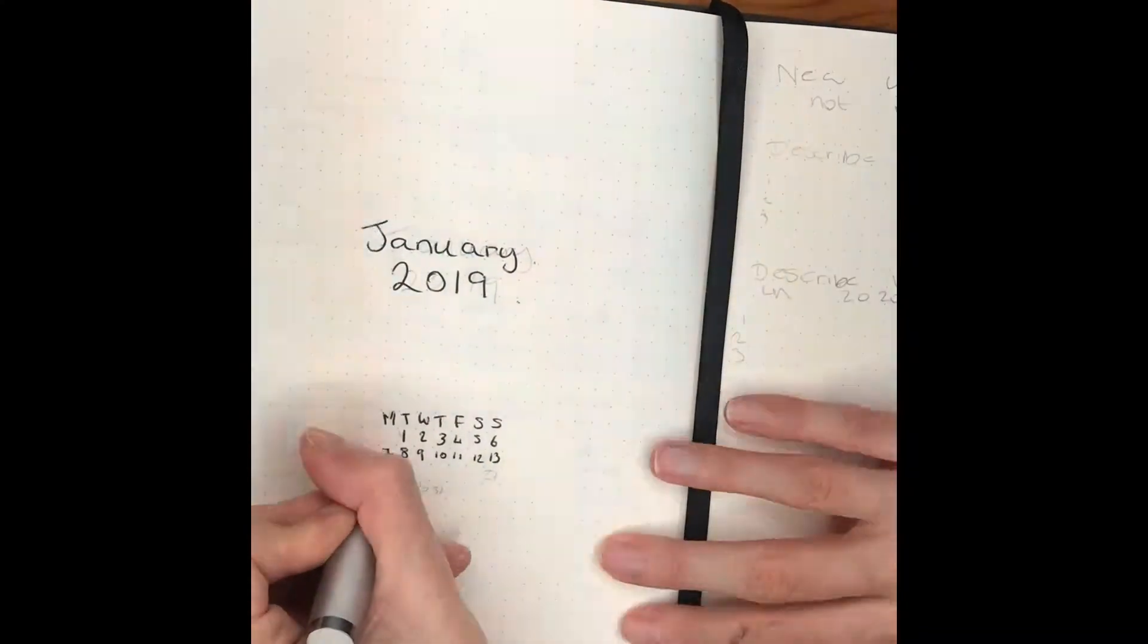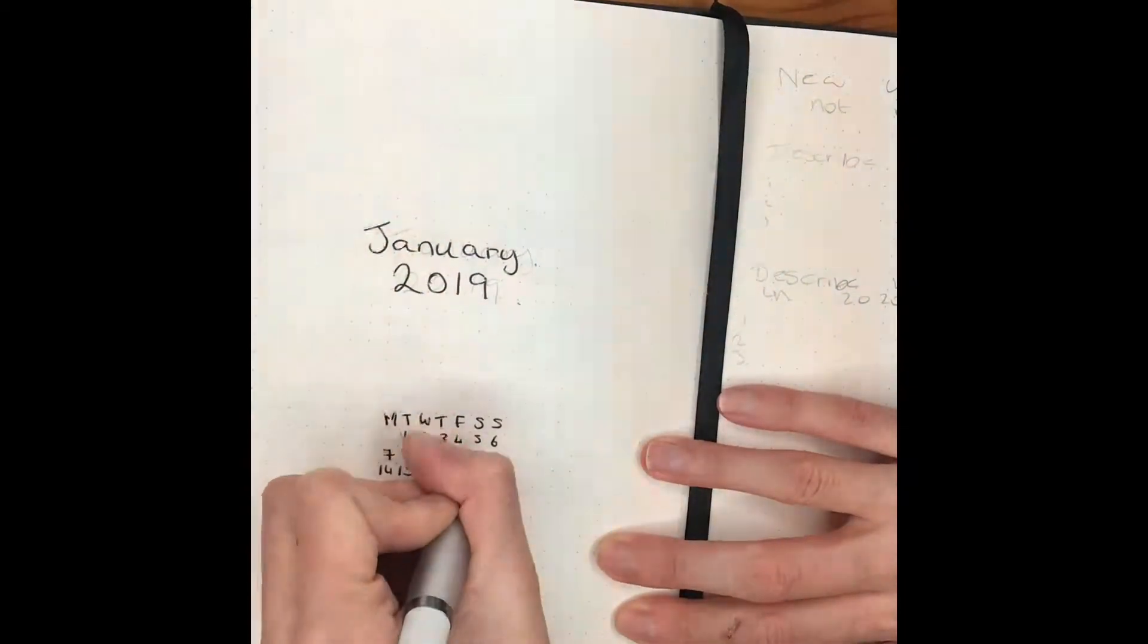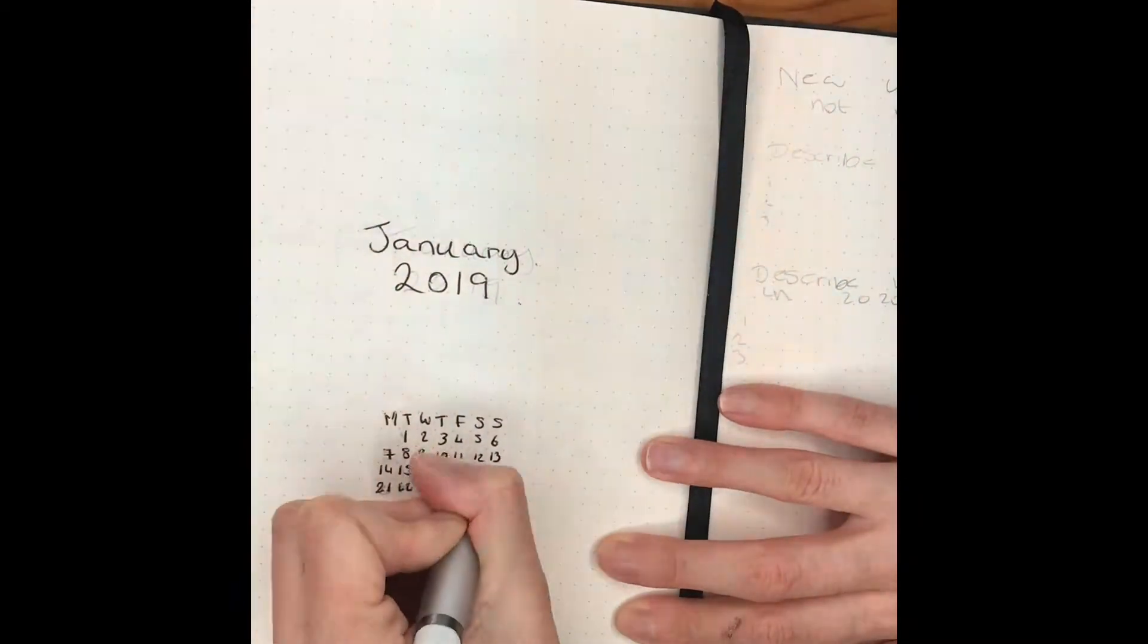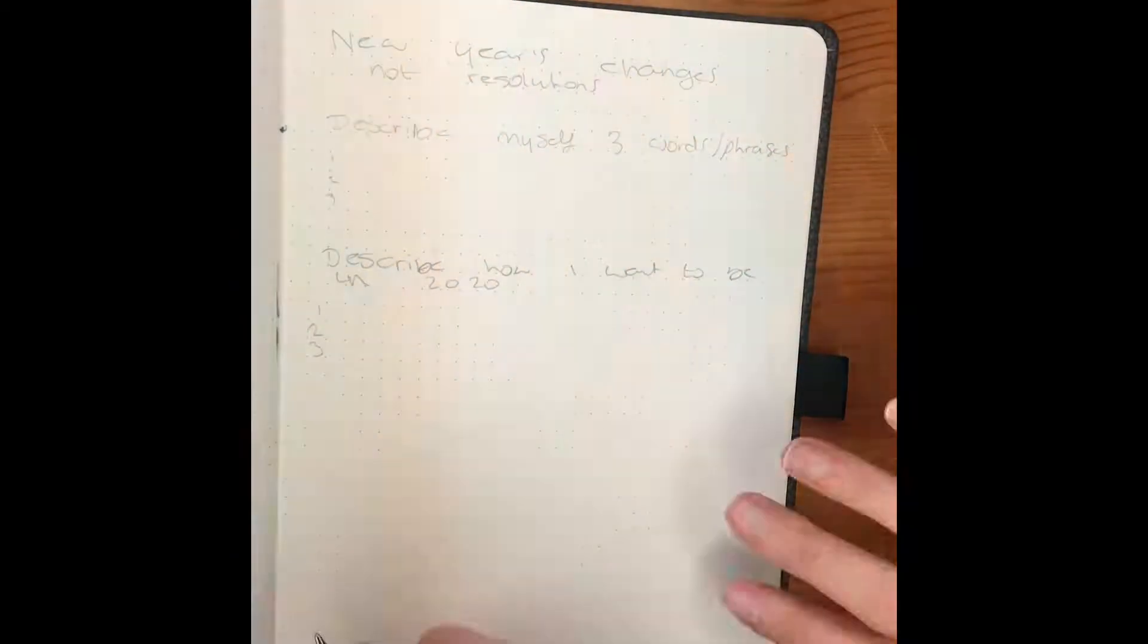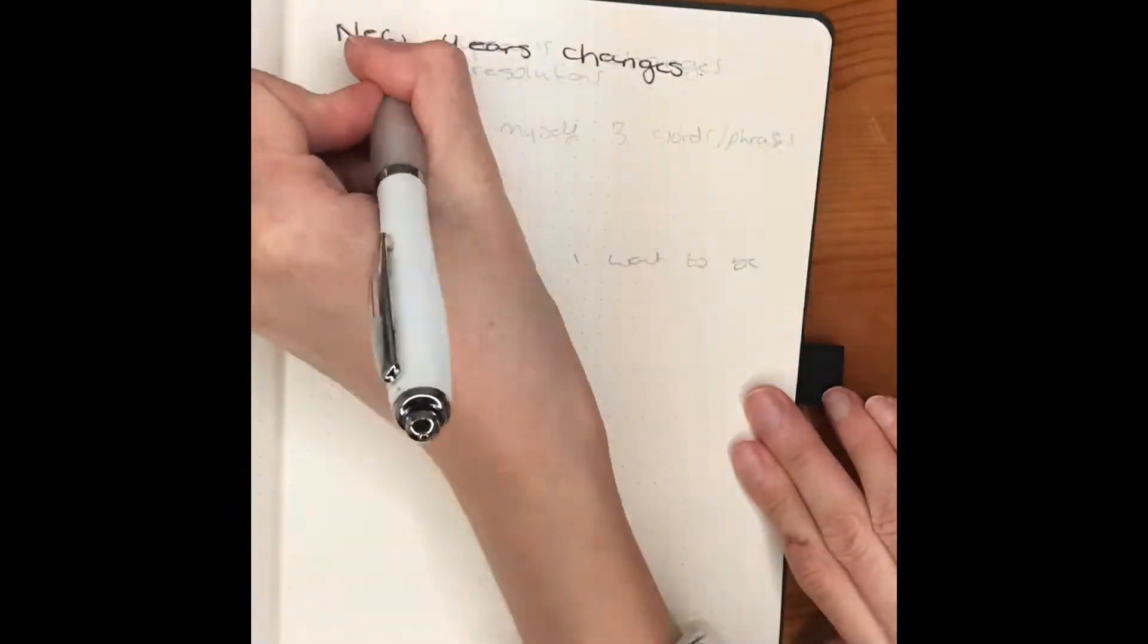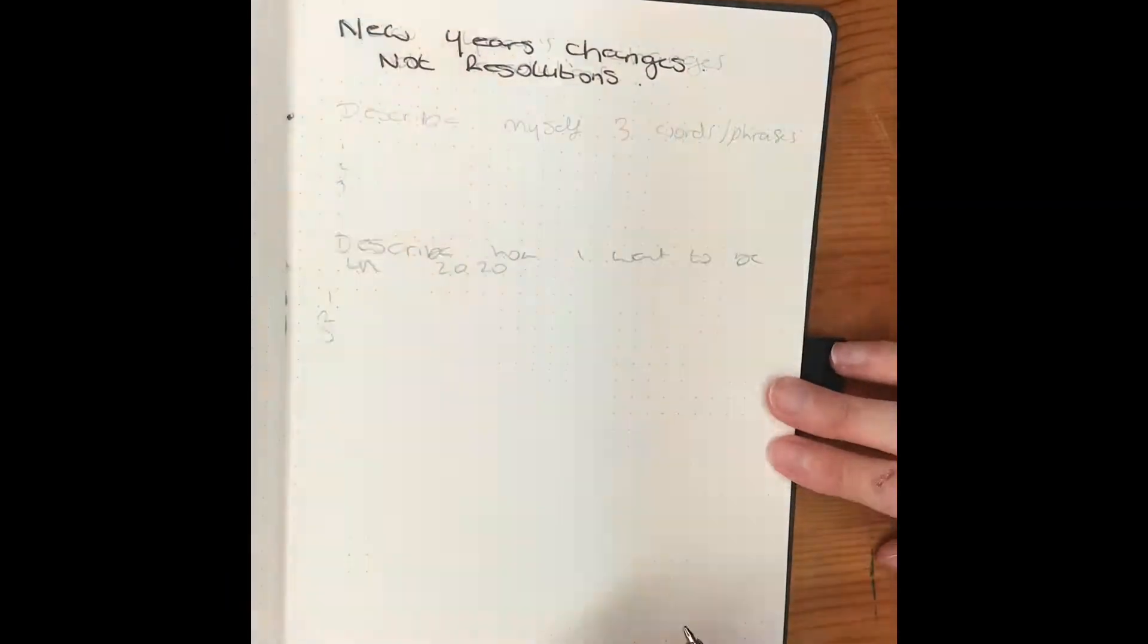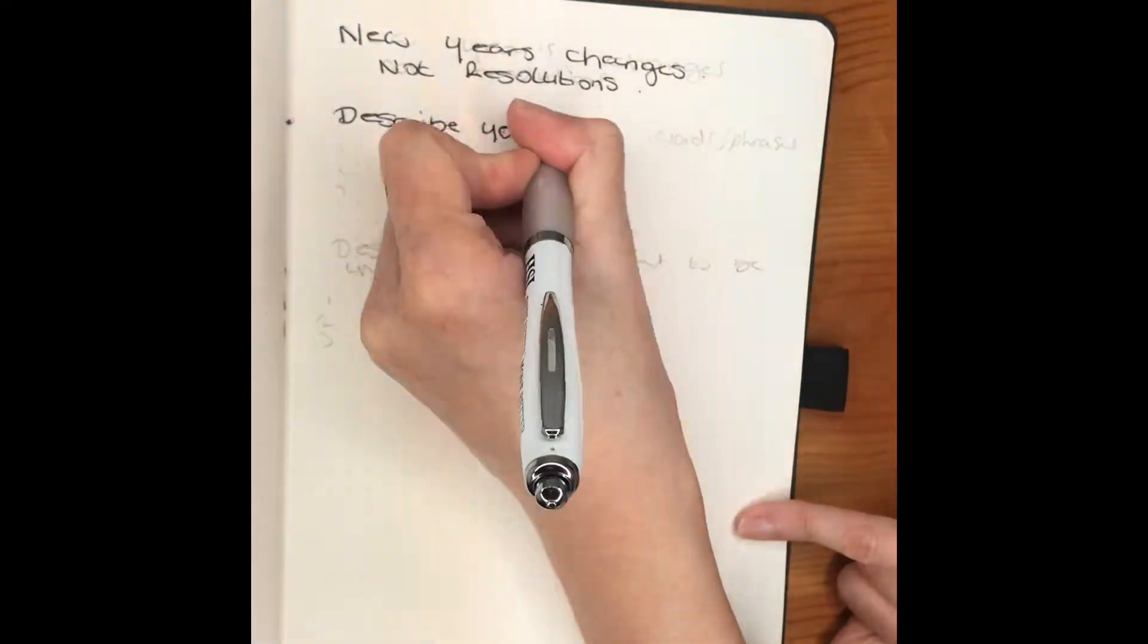As we go to the next page, I've decided not to do resolutions this year. Normally you do New Year's resolutions and say you want to lose weight or get more followers, but I chose that I didn't want to do that this year. I just want to be happier and healthier, so I thought this would be a better way. What I'm gonna look at is how I currently view myself, so I put down three words or phrases to describe myself.